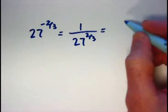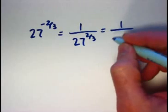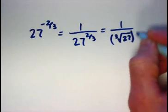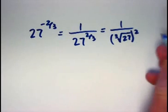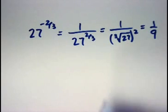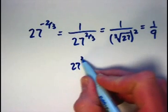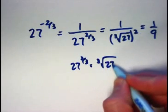I made this one easy on myself as well. 27 to the 2 thirds power can be thought of as the cube root of 27 squared. Cube root of 27 is 3. 3 squared is 9. This is 1 ninth.